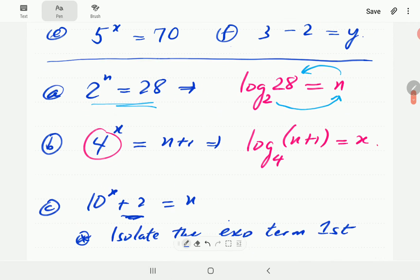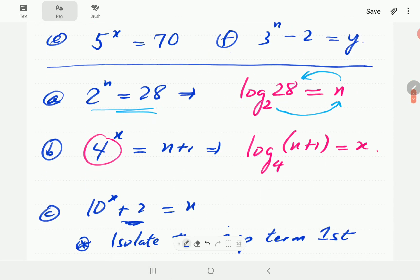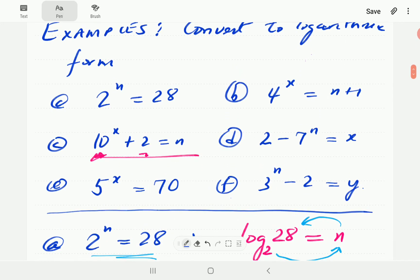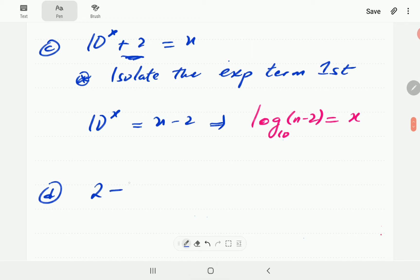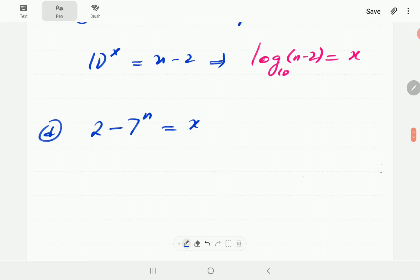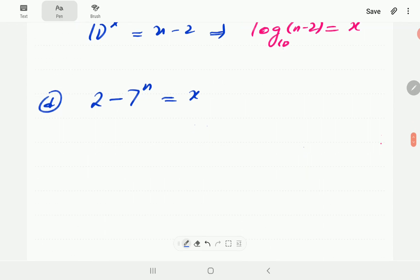d is 2 minus 7 to the power n is equal to x. Again here, we're going to want to isolate the exponential term first. And because of this minus here, we are going to take the 7 to the power n to the right-hand side. So it goes with a plus. Then we are going to take the x to the left-hand side.